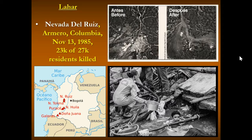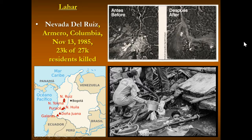An infamous example is Nevado del Ruiz from 1985. In November of that year, the town of Armero was completely buried. You can see the before and after pictures — here's Armero before, and here's Armero afterward. It was a really bad humanitarian disaster that killed 23,000 of the 27,000 residents.